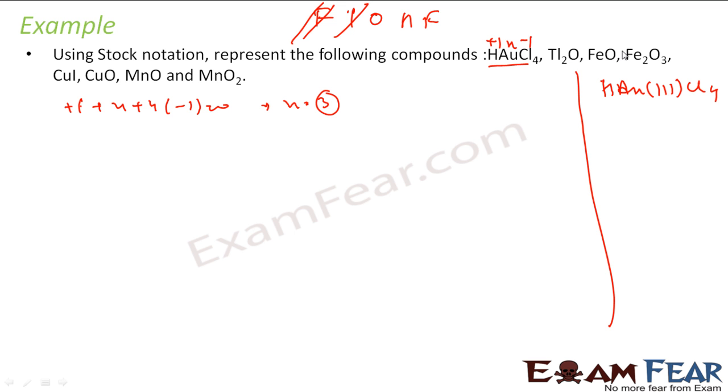Let's take this one, Tl2O. Let's find the oxidation of this. So O is minus two and let this be X. This becomes two into X minus two equals zero, so X becomes plus one. So that's Tl(I)2O, correct.